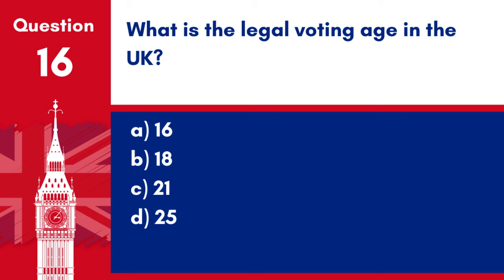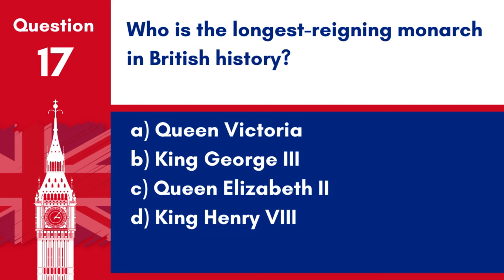Question 16. What is the legal voting age in the UK? a. 16. b. 18. c. 21. d. 25. Answer: b. 18. The legal voting age in the UK is 18.